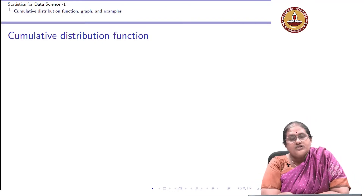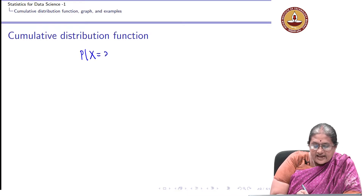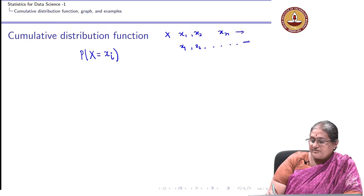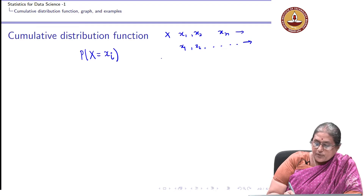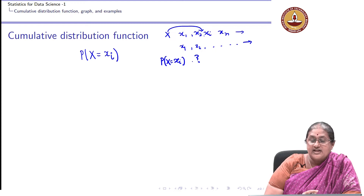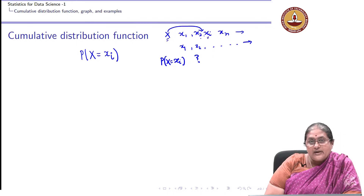The next concept we are going to learn about is the cumulative distribution function. A probability mass function gave us the probability of X taking a particular value xi. We assume that X takes values x1, x2, ..., xn — either a finite or countably infinite number of values. The probability mass function tells us the probability with which X takes a particular value xi.